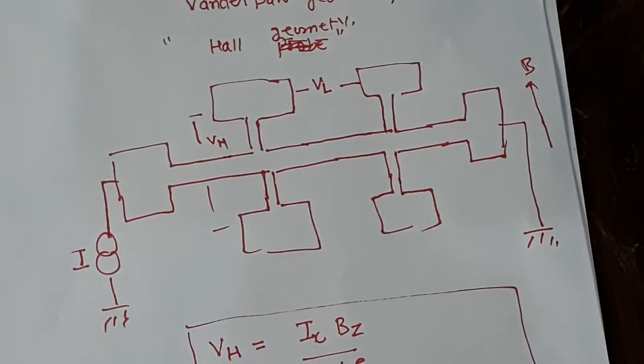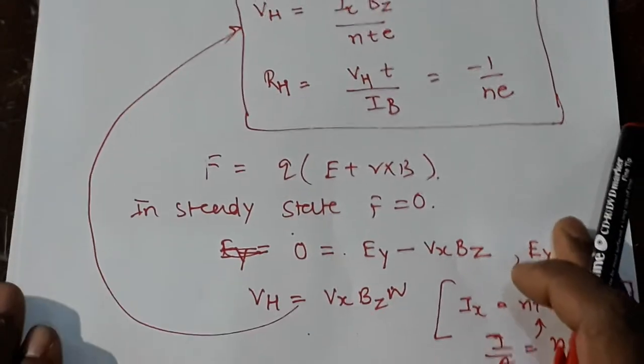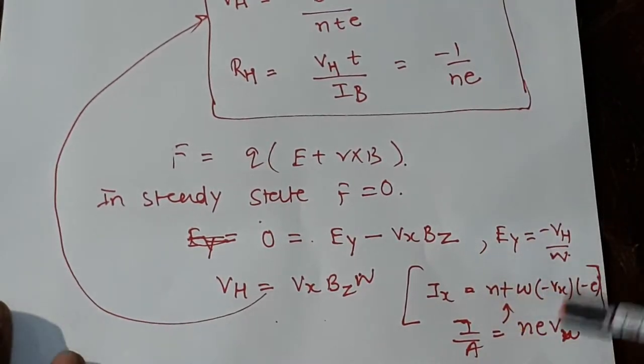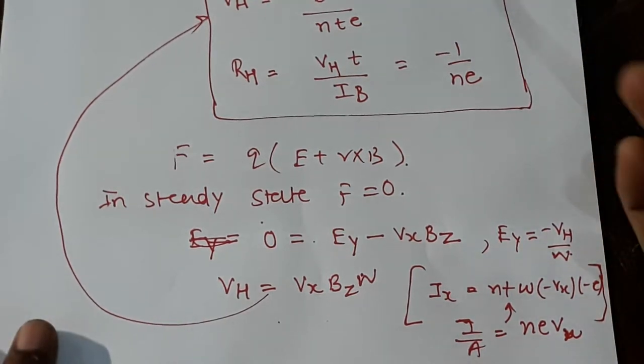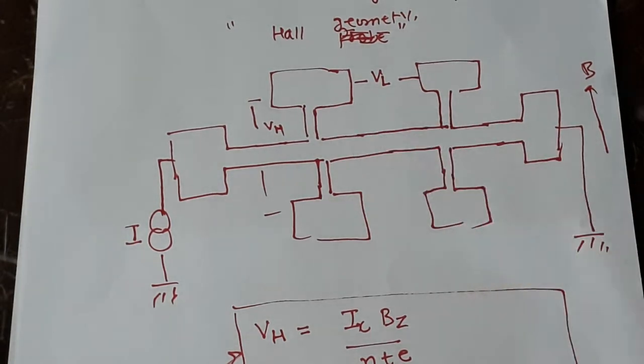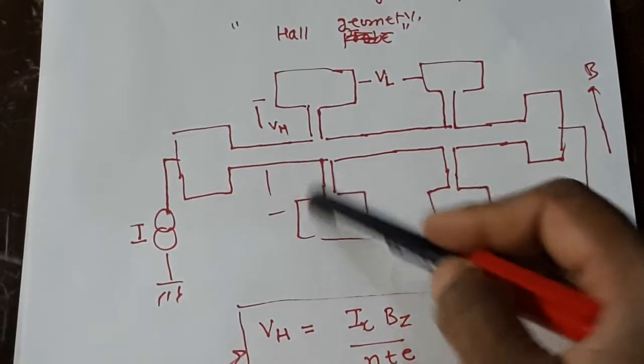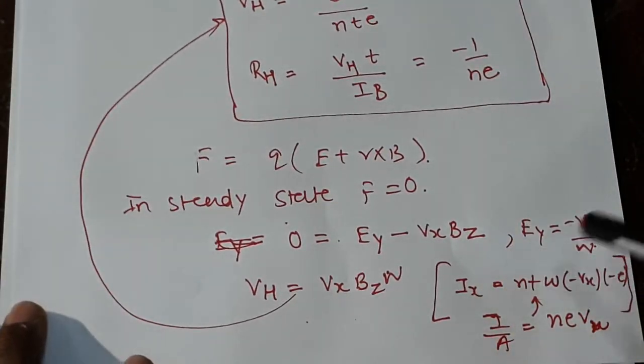How do you measure Hall effect? It's very simple. It's basically Lorentz force happening when you apply current. The magnetic field is applied perpendicular to the sample. This will force electrons to go towards one corner and holes towards the other corner.